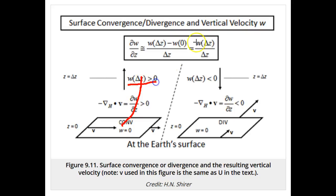For convergence near Earth's surface, we see that the partial derivative of w with respect to z is negative, which means that w must be negative above the surface since w equals zero at Earth's surface, so the air velocity w must be downward.